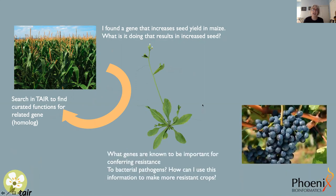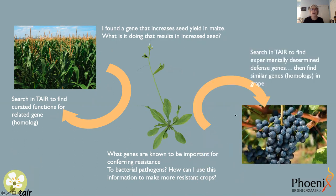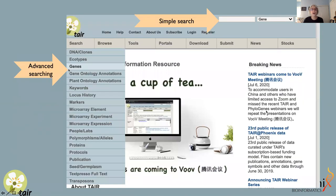Another very common use for TAIR is understanding a particular process — for example, what genes are important for conferring resistance to a bacterial pathogen, and how that information could be used to engineer more resistant crops such as a pathogen-resistant grape plant. In that case, you might search TAIR to find experimentally determined defense genes, and then use those sequences to find similar genes or homologues in grape. So how do you go about searching for this kind of information in TAIR?